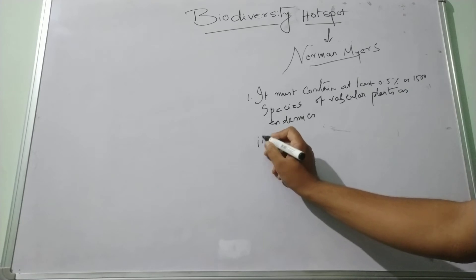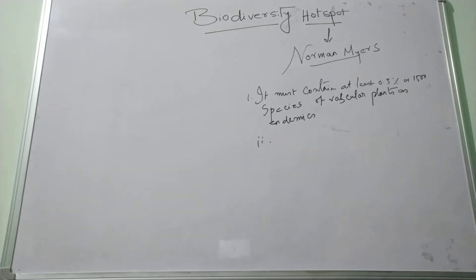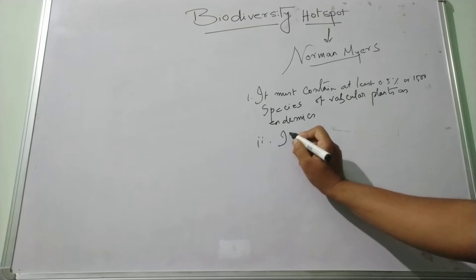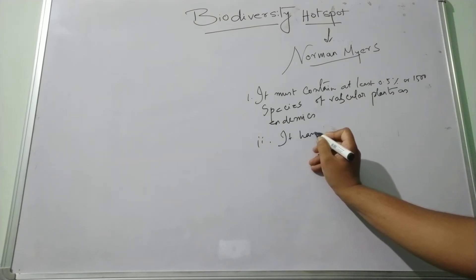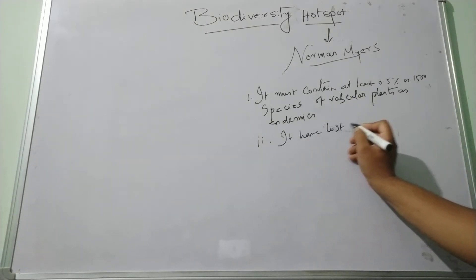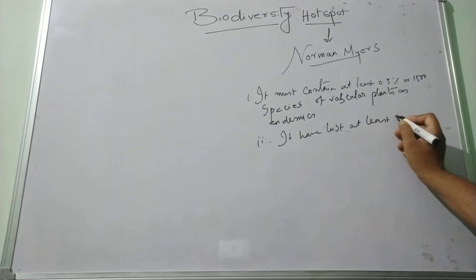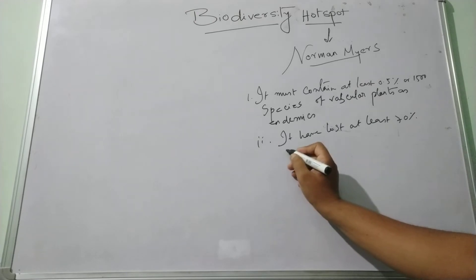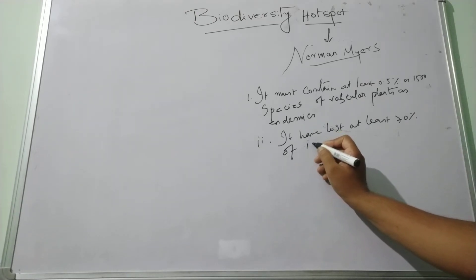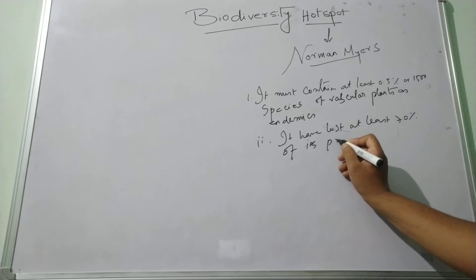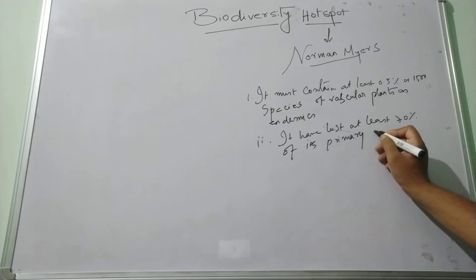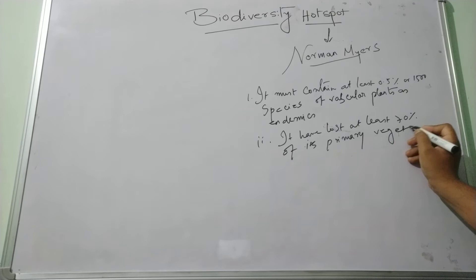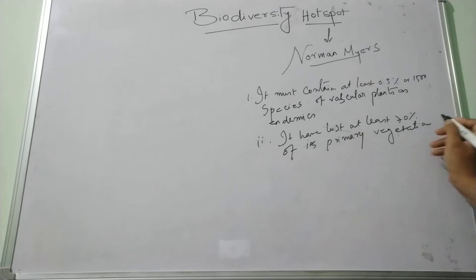And second, it must have lost at least 70% of its primary vegetation. These are the two important criteria according to Meyer to identify the hotspot areas.